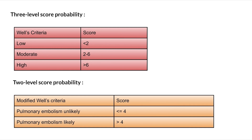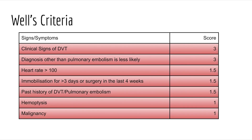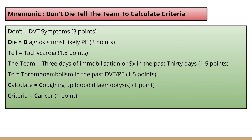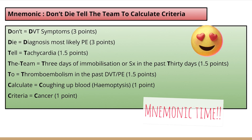In the two-level score probability, a score of less than or equal to 4 means pulmonary embolism is unlikely, and a score of more than 4 means pulmonary embolism is likely. This is difficult to remember, so I have come up with a mnemonic — it's mnemonic time!